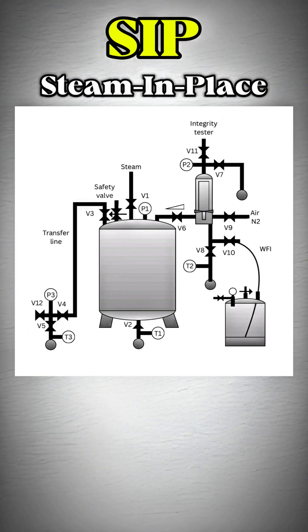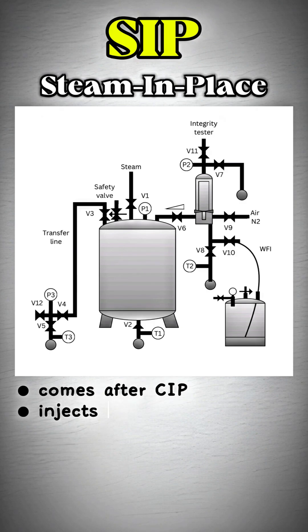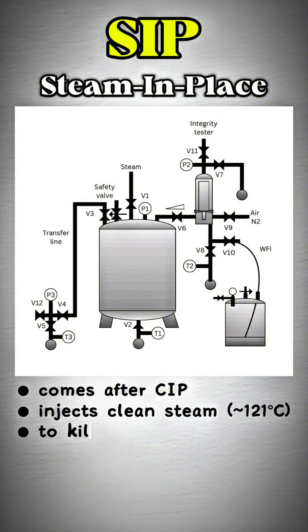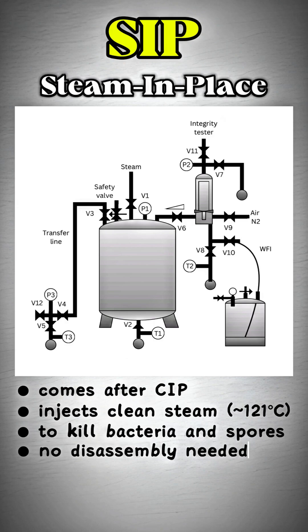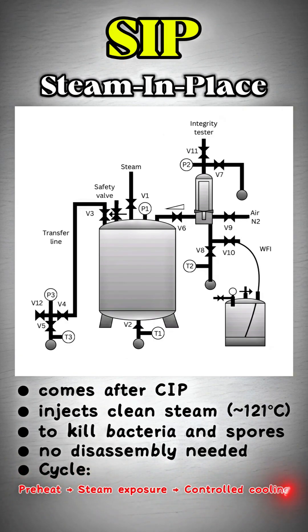SIP: Steam in Place. Steam in Place comes after Cleaning in Place. It injects clean steam — approximately 121 degrees Celsius — to kill bacteria and spores. No disassembly needed. The cycle: preheat, then steam exposure, then controlled cooling.